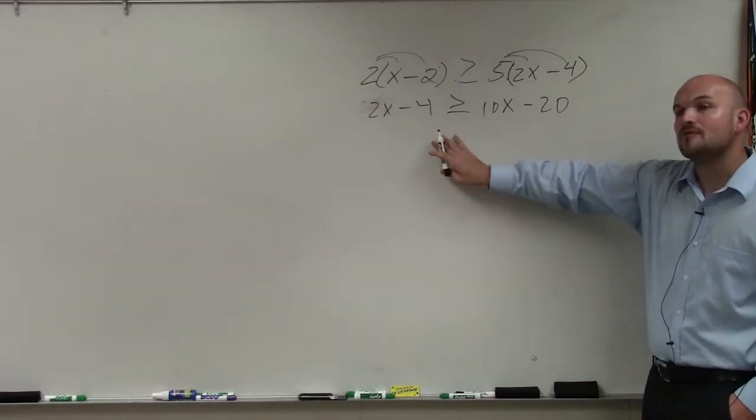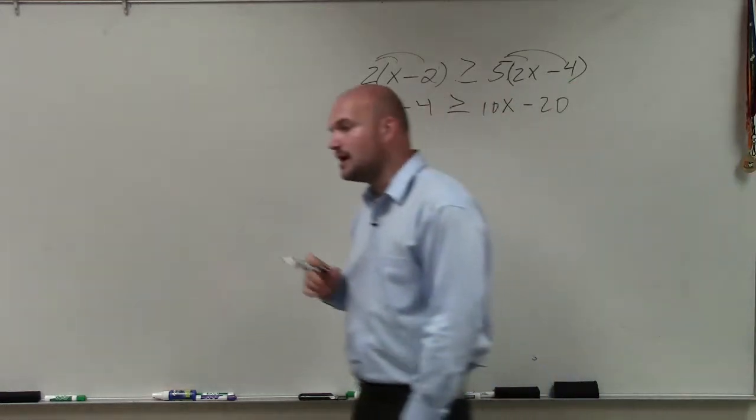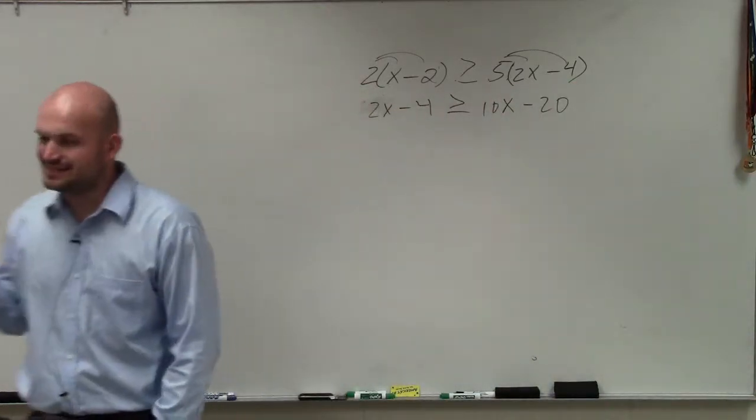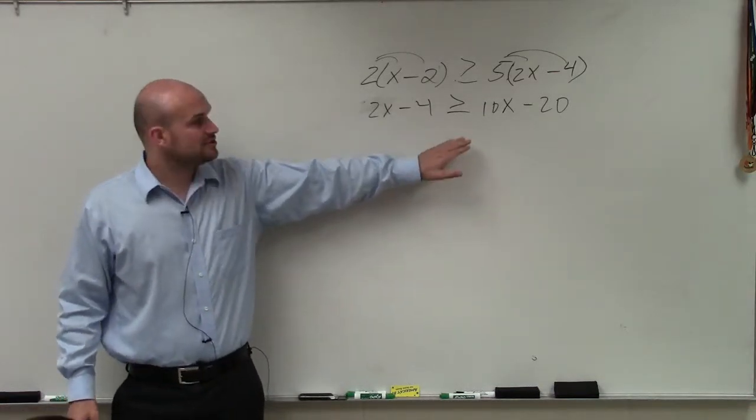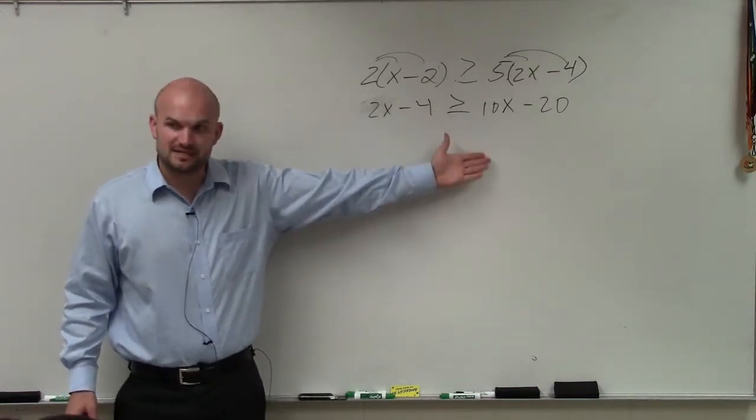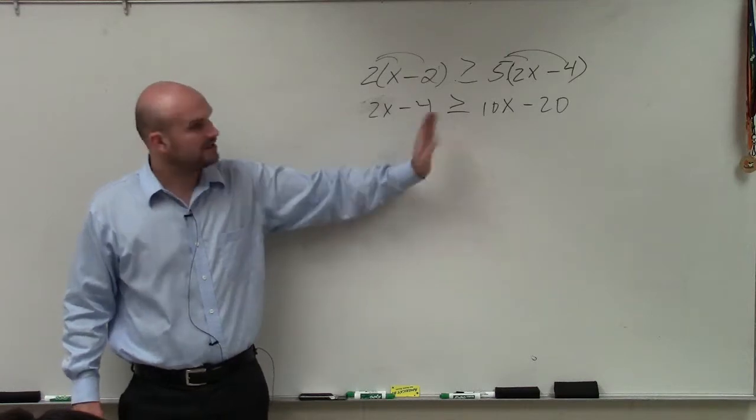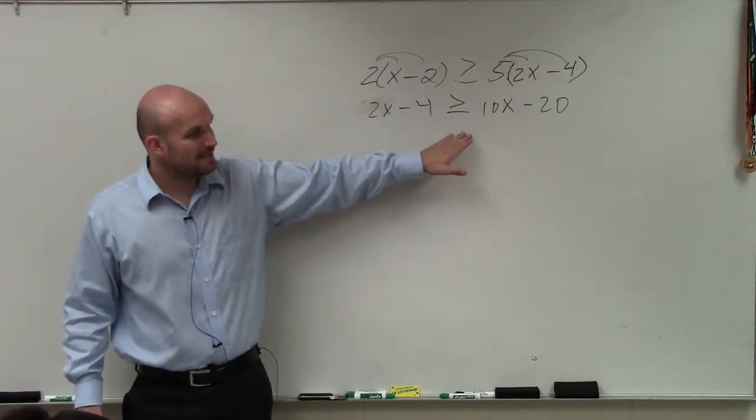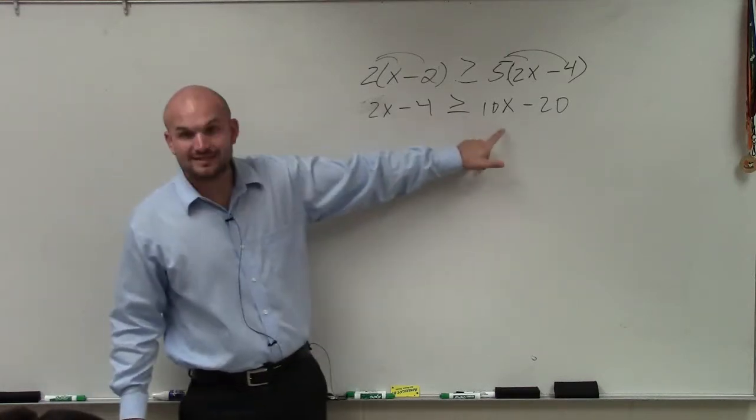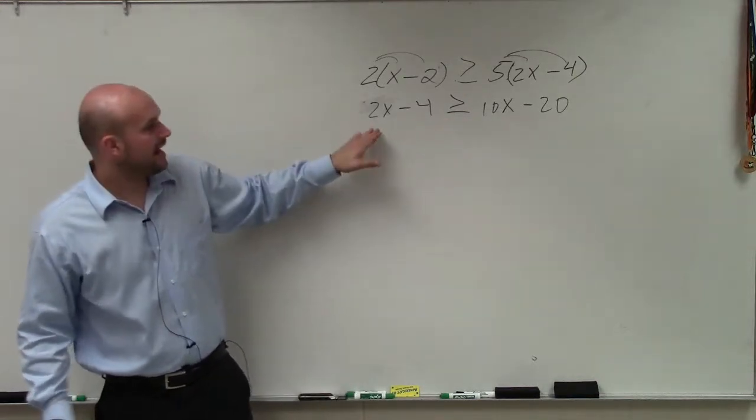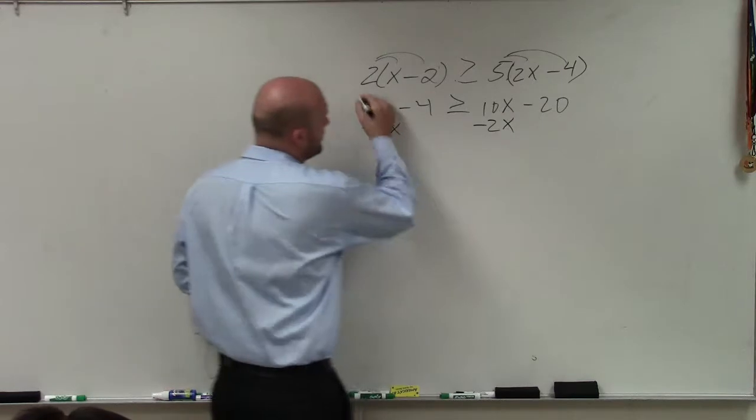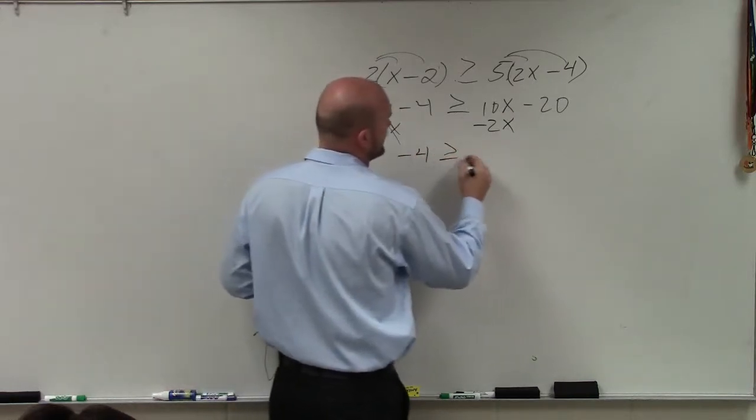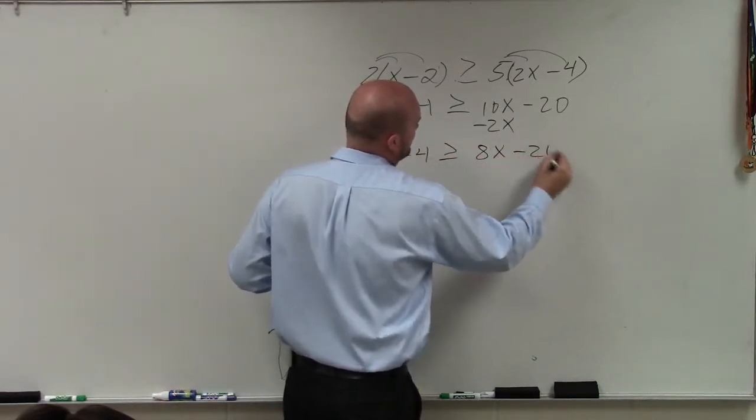Now, the next thing is if you guys remember when we were doing inequalities, it doesn't matter if you want to solve for x on the right or the left side. But I always told you to solve for x where it's going to be positive. So rather than subtracting the 10x, which is perfectly fine, I'd prefer to subtract the 2x on both sides. So therefore, I get negative 4 is greater than or equal to 8x minus 20.